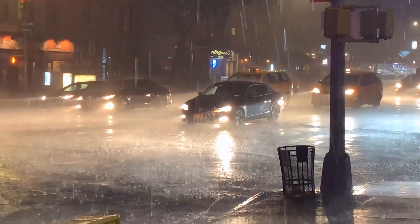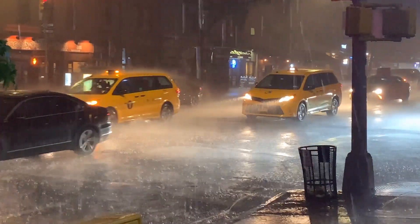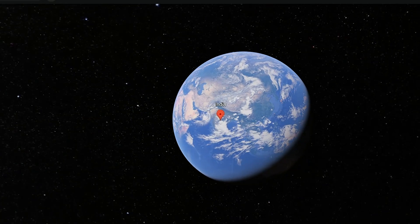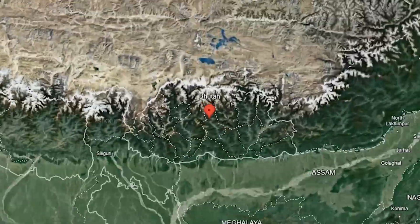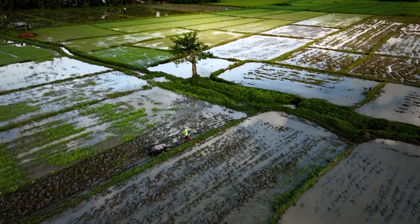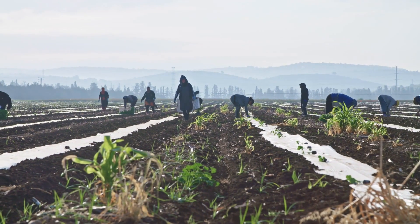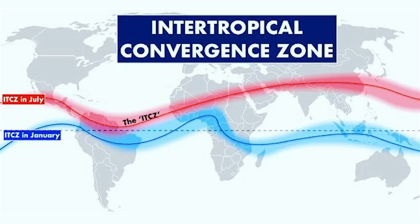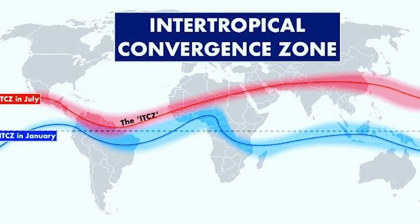The monsoon system comprises two main components: the South Asian Summer Monsoon (SASM) and the East Asian Summer Monsoon (EASM). The SASM, integral to the tropical monsoon circulation, affects countries like India, Pakistan, Bangladesh, Nepal, Bhutan, and Sri Lanka. It begins in June and lasts until September, operating within the Intertropical Convergence Zone (ITCZ), which is displaced from the equator.